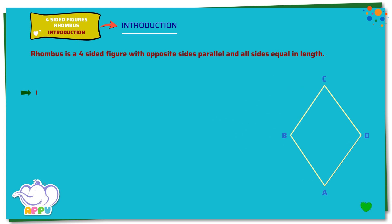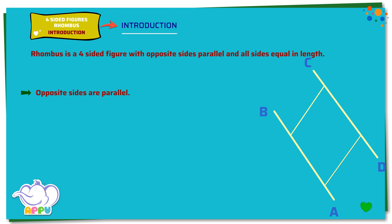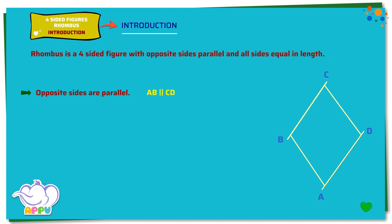In any rhombus, opposite sides are parallel. Parallel means the lines never meet. Here AB is parallel to CD, and AD is parallel to BC.